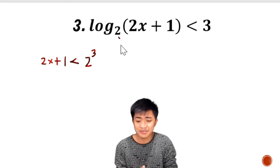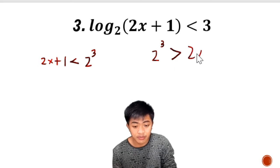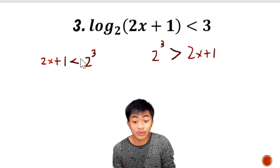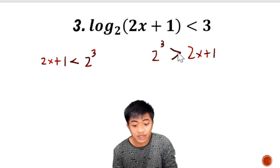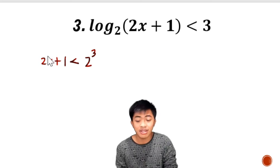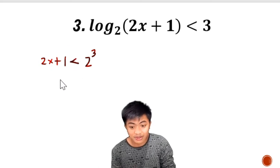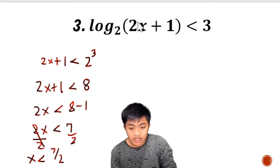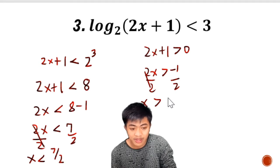Alternatively, if you put the argument on the right side, you must reverse the inequality. I prefer keeping the argument on the left and preserving the inequality. Solving for x gives x less than 7 over 2. We then get the argument, set it greater than 0, and solve — giving x greater than negative one half.